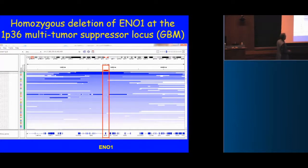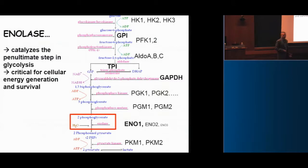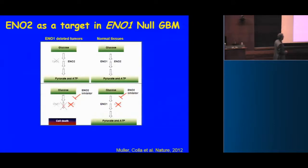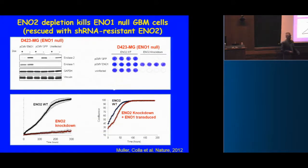Neighboring these tumor suppressors is enolase-1, a critical enzyme responsible for the penultimate step in glycolysis — very important for energy production. If you knock it out in yeast, where there is only one enolase, it is cell-lethal. In mammalian systems there are multiple orthologs: ENO1, ENO2, and ENO3 which is muscle-specific. So ENO1 and ENO2 are the major ones. We sought to determine if we could generate a collateral lethal situation by deleting ENO1 and extinguishing ENO2 genetically or pharmacologically, while normal cells still have ENO1 intact.